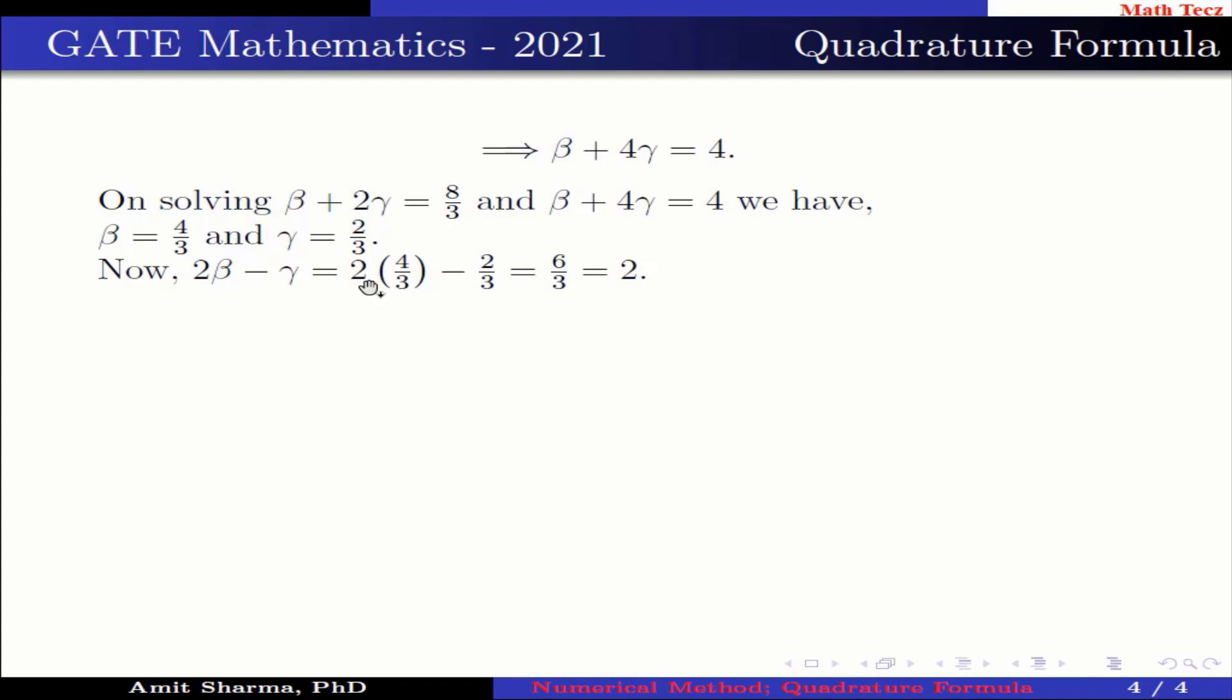2β minus γ equals 2 times 4 by 3 minus 2 by 3, which equals 2. Hence, the value of 2β minus γ is equal to 2.